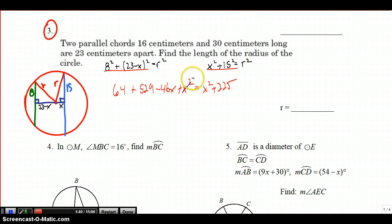Subtract x squared from both sides, and combine like terms, move like terms to the same side, so negative 46x equals negative 368, x equals 8. And since x equals 8, we can then plug that in to this equation, or the other equation, 8 squared plus 15 squared equals r squared, r equals 17.